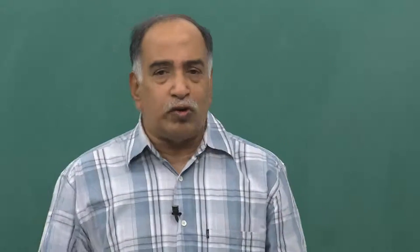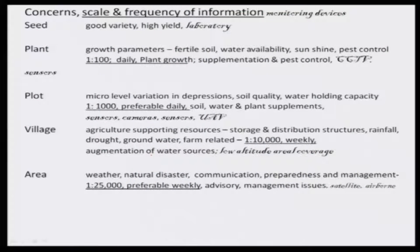Now this is a general thing. What about me? What about the globe? Why should I bother about it, or what types of things can happen? Agriculture depends on seed, water, and soil fertility. These are the three major issues which affect agriculture, and pests to some extent. So the concern of people is about scale — meaning area or how many people are there — frequency of information, how frequently this information is needed, and what modern monitoring devices we may have to have for continuous monitoring and course corrections.